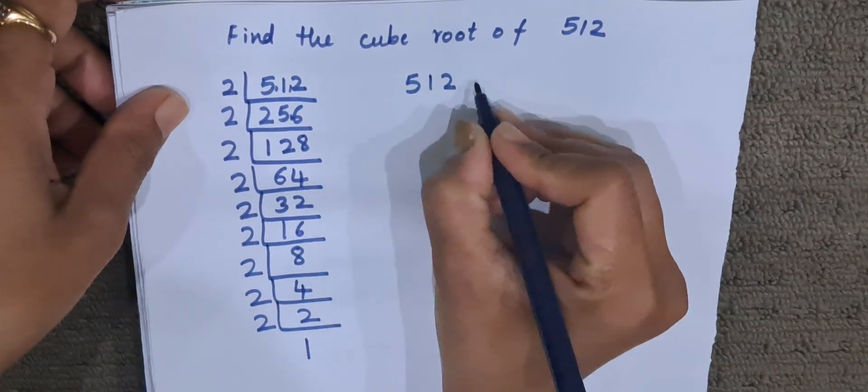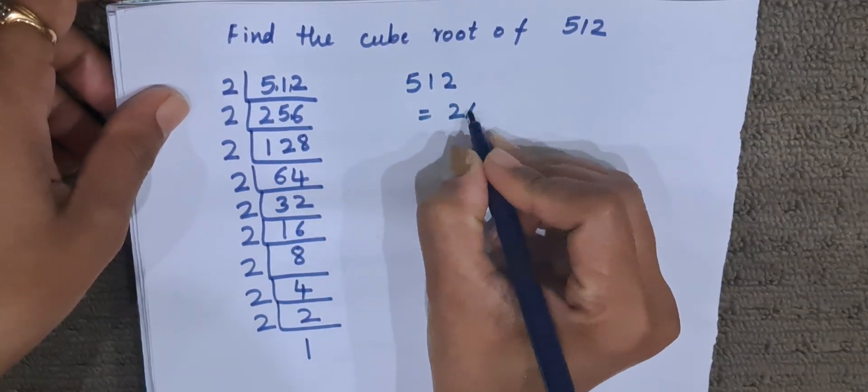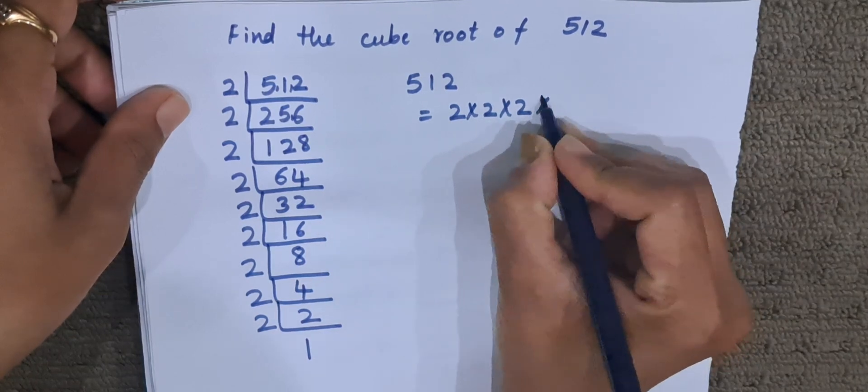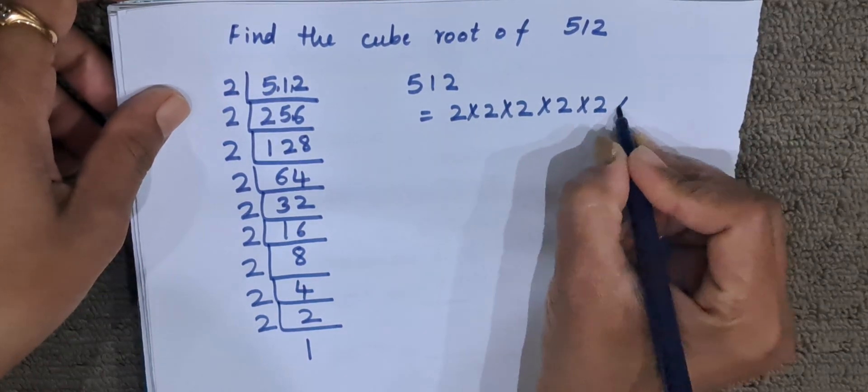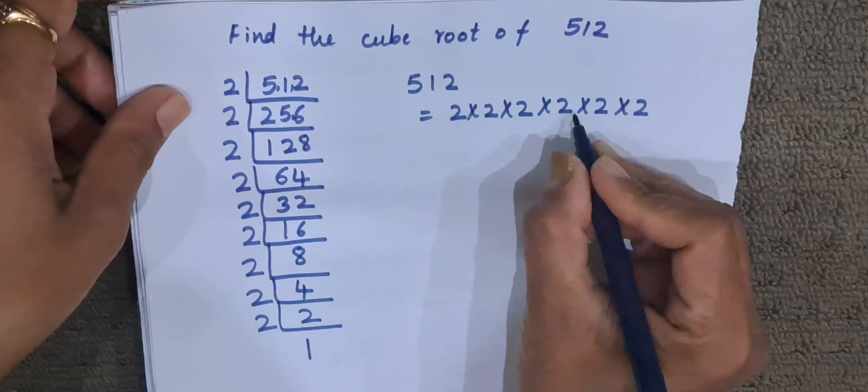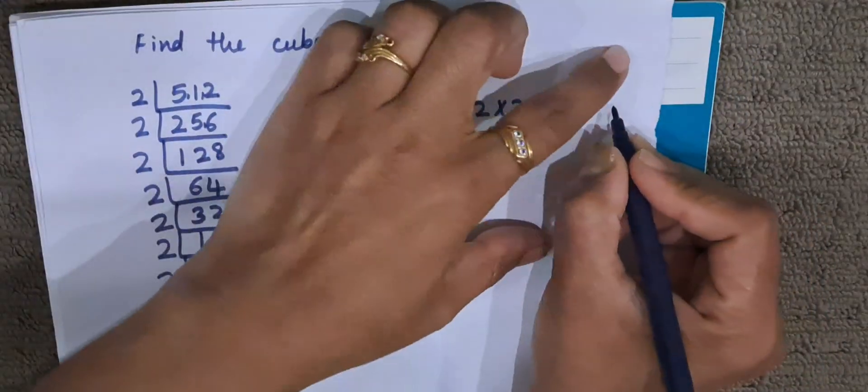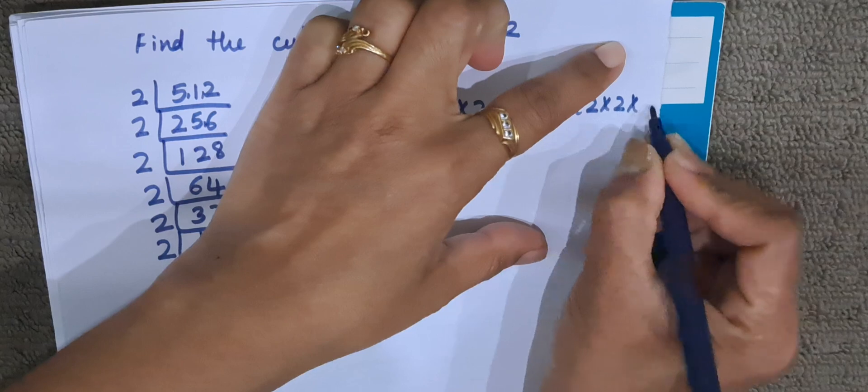So 512 is equal to 2 into 2 into 2. We will do it 9 times. Okay, now 3 times. 1, 2, 3, 4, 5, 6, 7, 8, and 9.